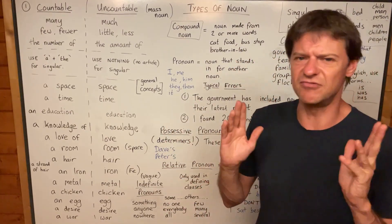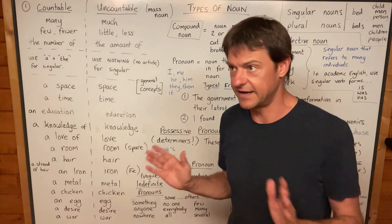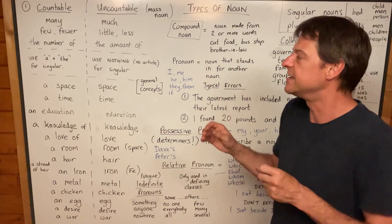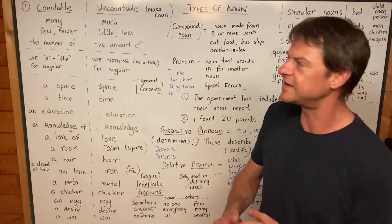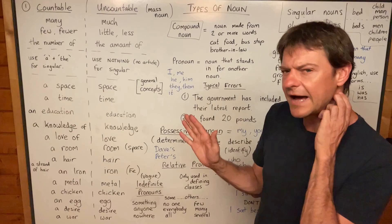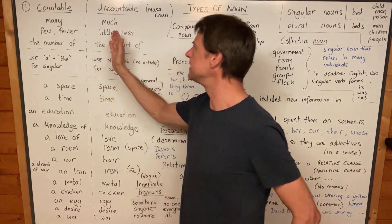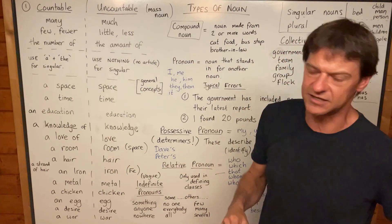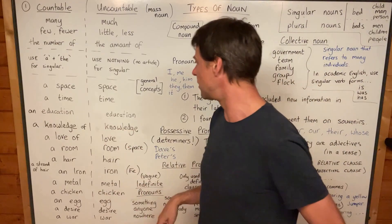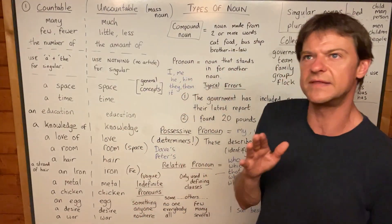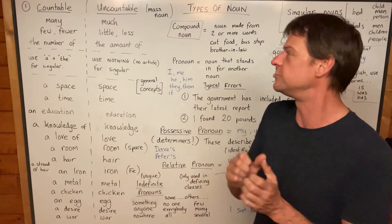Articles — a, the, an, and no article — are a really difficult topic. It's very difficult to learn and get correct in every single sentence, and it's very difficult to teach because there are so many exceptions. But if you get a good grasp of the difference between countable and uncountable nouns in English, it will be much easier to use a, an, the, and no article. It's not just important — it's crucial.